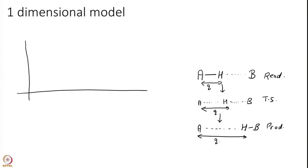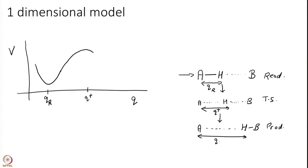If I want to draw a potential energy with respect to this coordinate Q: when Q is small, corresponding to the reactant, I will have some kind of a minimum — AH is forming a bond, and whenever you have a bond you have a minimum in the energy surface. The transition state by definition should have a maximum along the reaction coordinate. And when Q is very large you will have another minimum. So this is my reactants, this is the transition state, and this is the product.